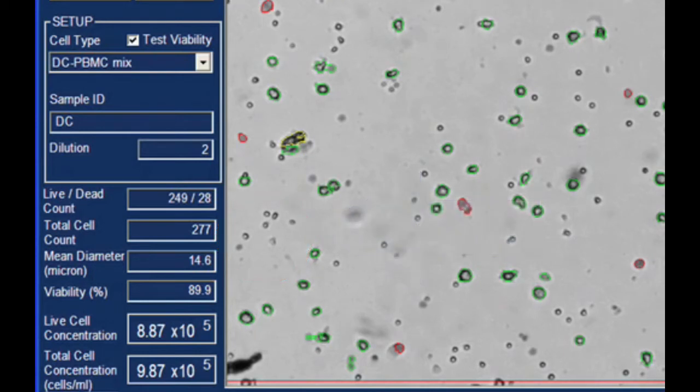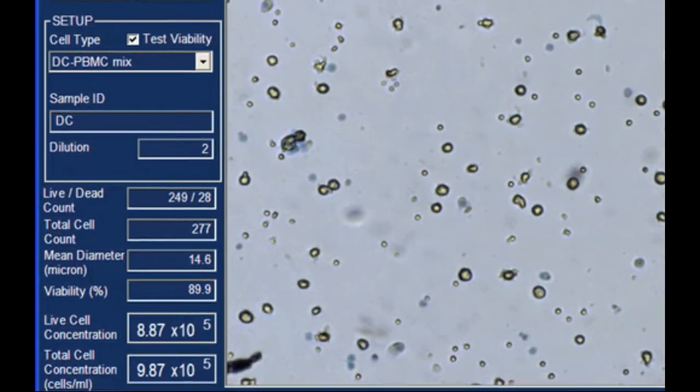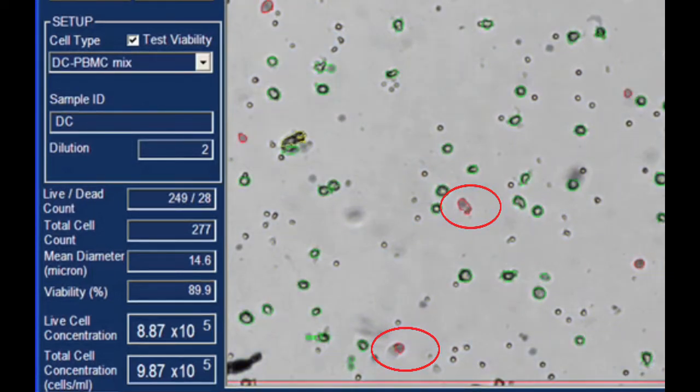Because the TriPan Blue dye is only permeable to cells with compromised cell membranes, Cellometer software counts darker cells stained with TriPan Blue for the dead cell count and percent viability determination.